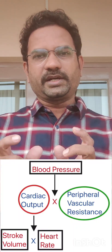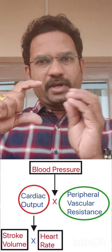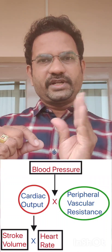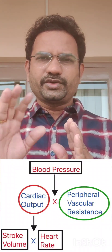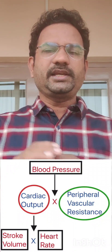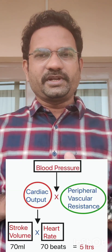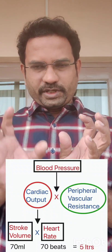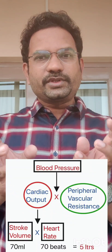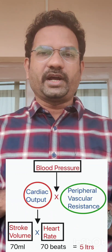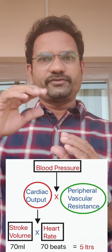Cardiac output is determined by two factors: stroke volume and heart rate. Stroke volume is the amount of blood pumped into the aorta with each contraction — normally about 70 ml in a healthy adult. Heart rate is typically 70 beats per minute. So cardiac output equals stroke volume times heart rate: 70 ml × 70 beats = 4,900 ml, or approximately 5 liters per minute.